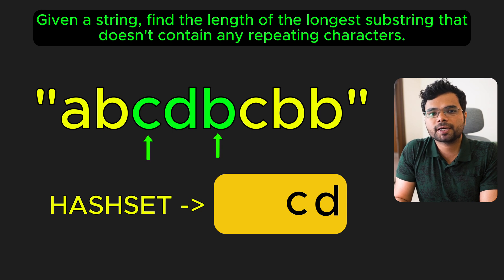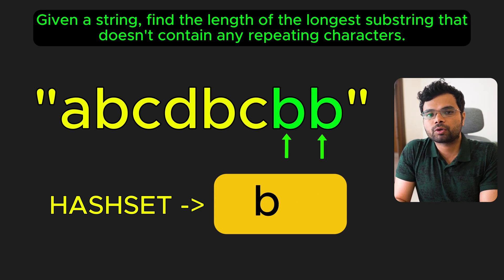After each adjustment, calculate the length of the current substring and update the maximum length if needed. Continue until the right pointer reaches the end of the string. Here is how it looks like in code.